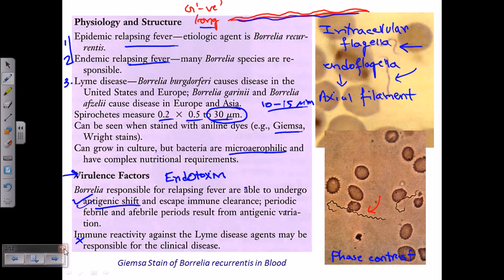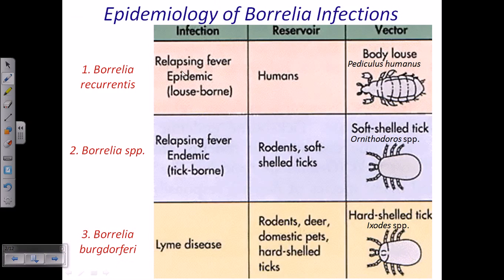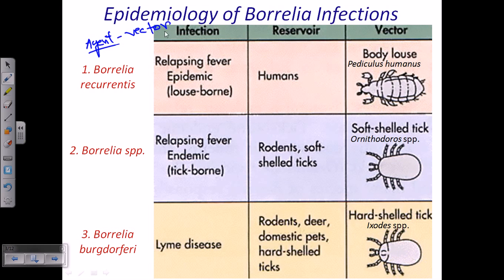Let's talk about the epidemiology of Borrelia infection — the type of Borrelia species, the infections related with them, and the reservoir for the disease. They require a reservoir where they are stored for the longer run, and they also have a vector which carries the infection from one reservoir to another.